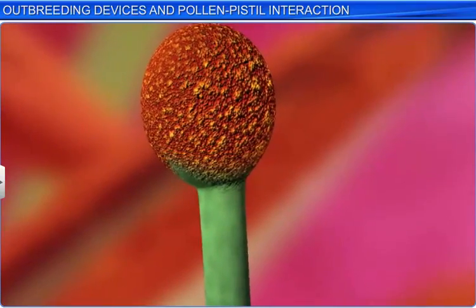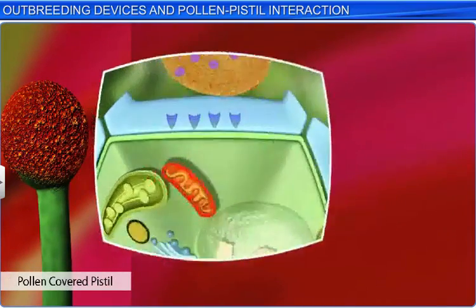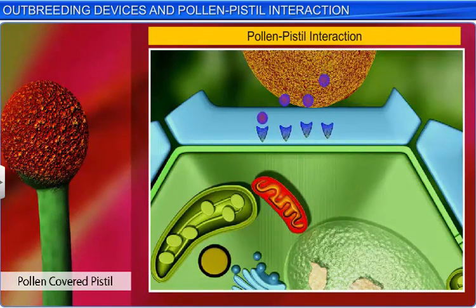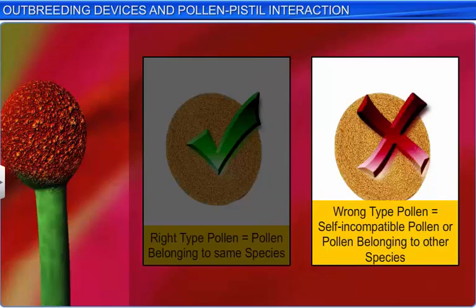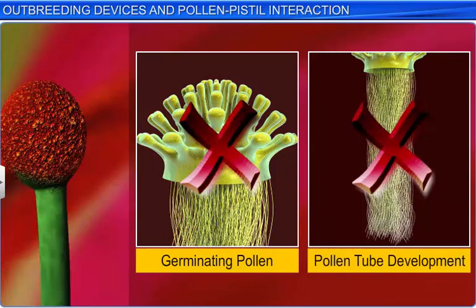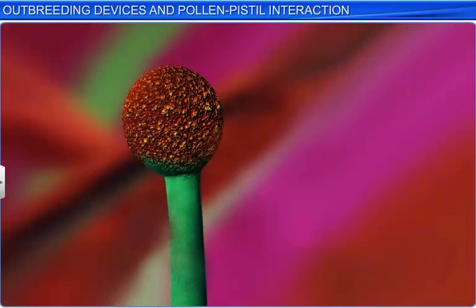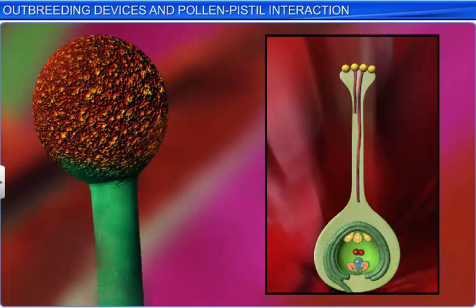Interestingly, post-pollination, the pollen and pistil start interacting with each other by releasing a series of chemicals. This interaction allows the pistil to recognize whether the pollen is the right or wrong type. The right type implies that the pollen belongs to the same species as the stigma, while the wrong type means the pollen is self-incompatible or belongs to another plant species. The pistil rejects the wrong type by preventing germination or disallowing pollen tube growth. Conversely, if the pollen is of the right type, the pistil accepts it and initiates post-pollination events.